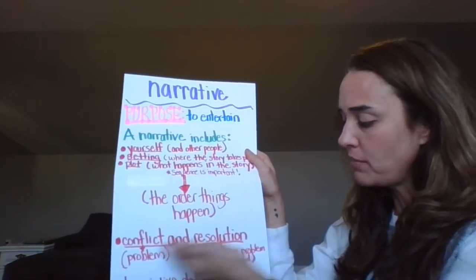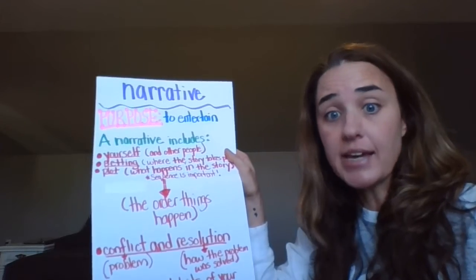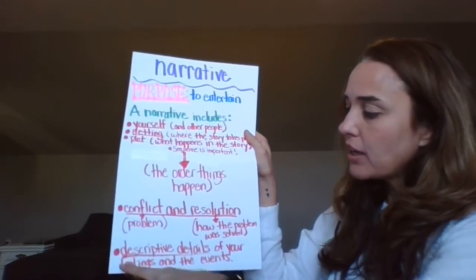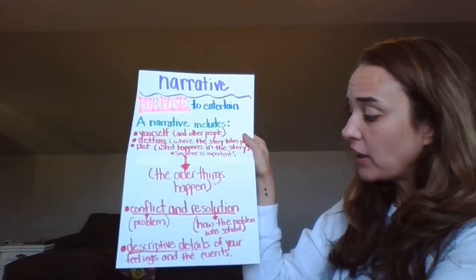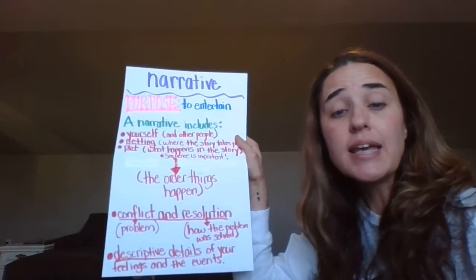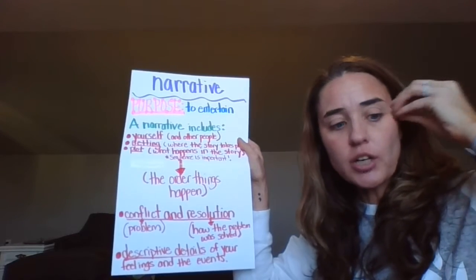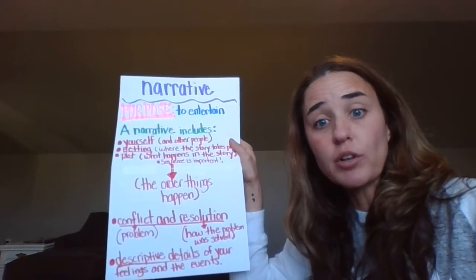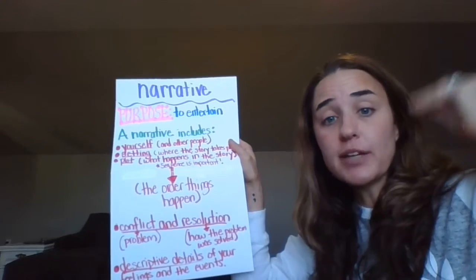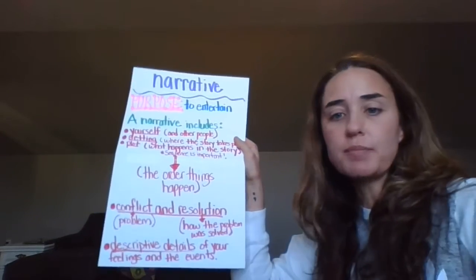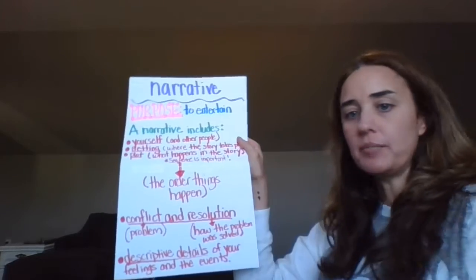Conflict and resolution is just a problem and how you solved it. If your story doesn't have that, it's okay — it's optional. Then you want to have descriptive details. These are the details of your feelings and the events you talk about in your story, because if you don't have these key details, the reader won't be able to make a picture in their mind when they're reading your story. Remember how we talked about making pictures in your mind when you read a book? That's where descriptive details come into play.